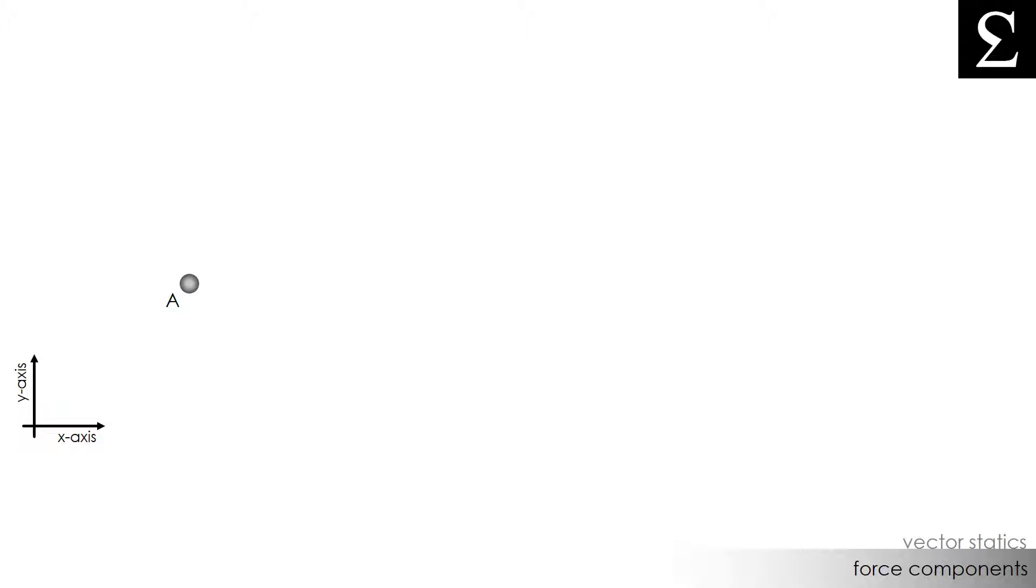There are two ways we can find the components of a force. The first is when the resultant force and one of the components of the force are known. So let's say we have a force F drawn here and it's acting on particle A. If we already knew one of the components of the force, let's say P, then we could easily find the next component of this force using a graphical approach.